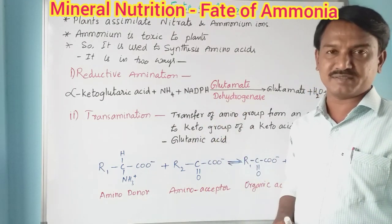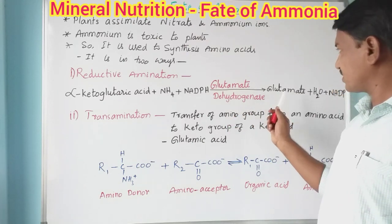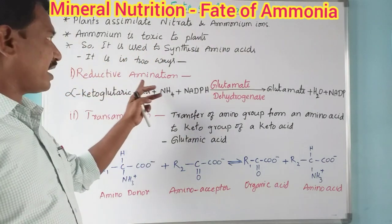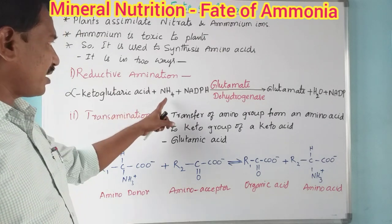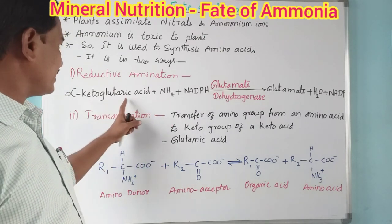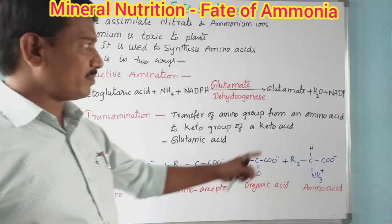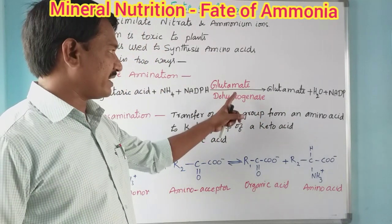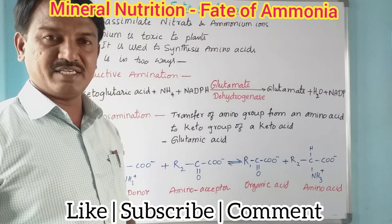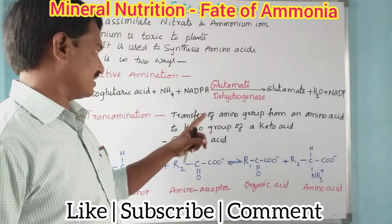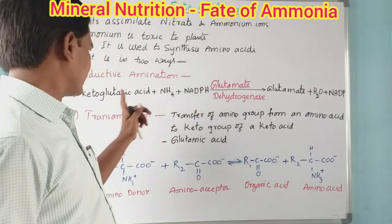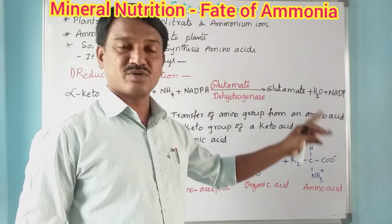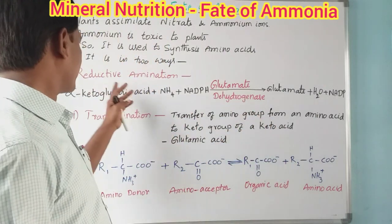In the first step, reductive amination, ammonia reacts with alpha-ketoglutaric acid to form glutamate. This reaction is catalysed by glutamate dehydrogenase. Protons are removed from NADH, and alpha-ketoglutaric acid combined with ammonium converts into glutamate. That is the first step — reductive amination.